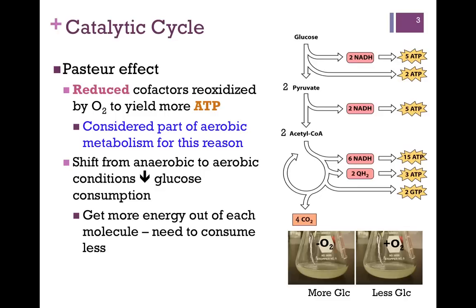To see the distinction between anaerobic and aerobic metabolism — that is, in essence, the Pasteur effect — it refers to an experiment conducted by Louis Pasteur. He set up two identical flasks, illustrated at the bottom of the screen on the right, with identical amounts of nutrients and identical inoculation of bacterial culture. In one flask, bacteria were grown anaerobically in the absence of oxygen, and in the other flask, they were grown in the presence of oxygen. What he found was that the flask of bacteria grown anaerobically consumed a great deal more glucose than those grown with oxygen.